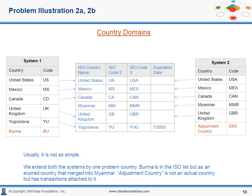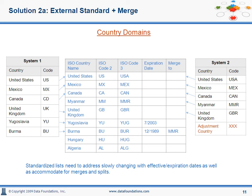Now let's take the same example and try to make it closer to reality. In one system, we will add a historic country, Burma, and in the other system, an adjustment country. If looking at this adjustment country gives you a bemused smile, or thinking about something even worse such as an unknown country, well, welcome to the world of data harmonization. The solution for the historic country issue is a domain merge — get the historic country list and merge it with the current standard from the authoritative external source. We have extended the structure to include merged. The ISO standard has merged Burma into a new code, Myanmar, so we've handled the Burma issue.